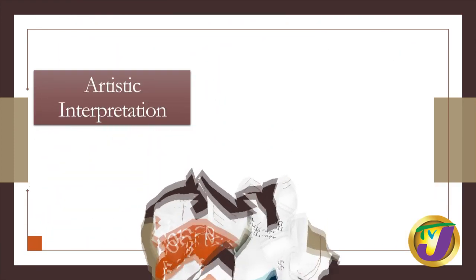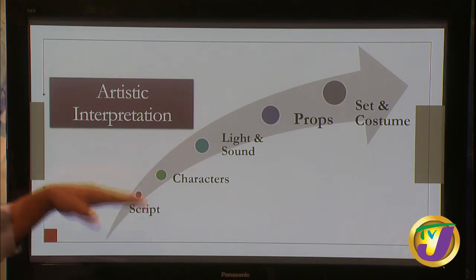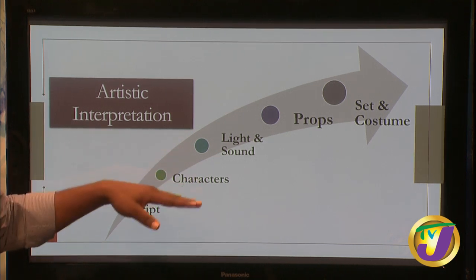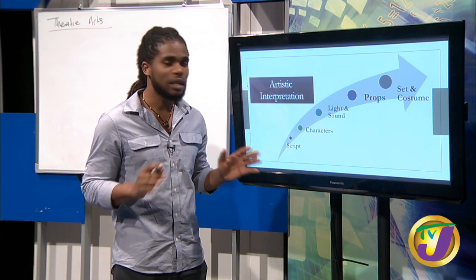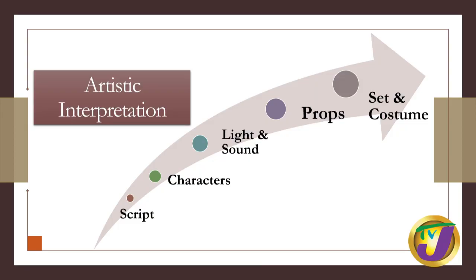For artistic interpretation, the director reads the script, gets an understanding, and makes a determination on how to execute it. Regarding characters, we look at the acronym PIMPS. The first P represents the Physical state of the character. I represents the Intellectual state — how smart the character is, whether street smart or educated. M represents the Moral state — the character's belief system, what they believe in. P represents the Psychological state — whether the character is sane or insane, including emotional state. S represents the Social state — how the character interacts with their environment.